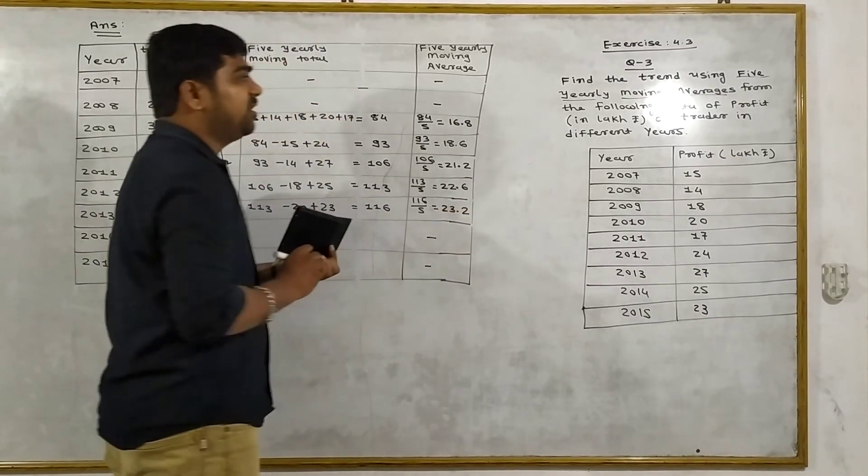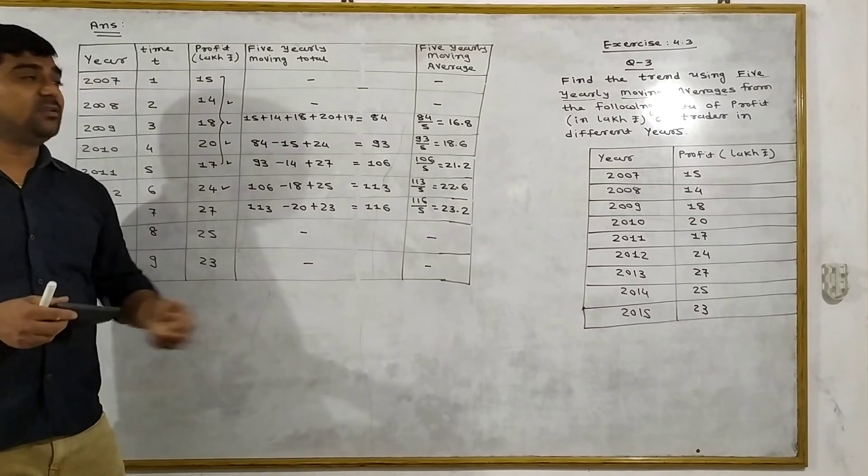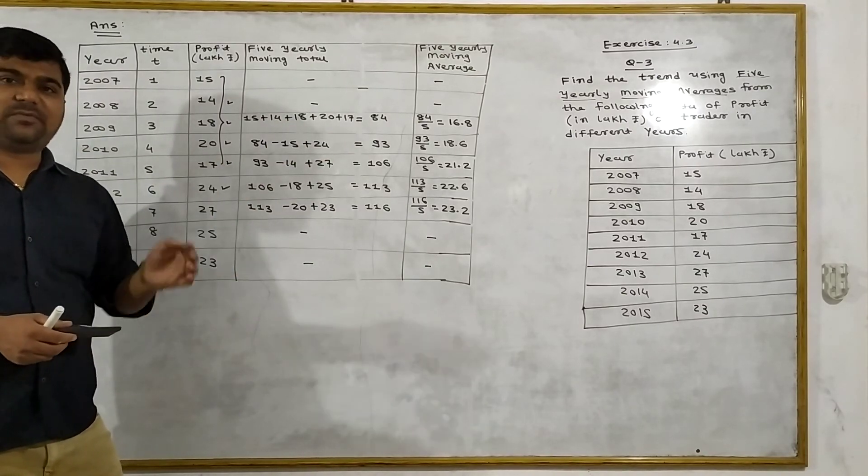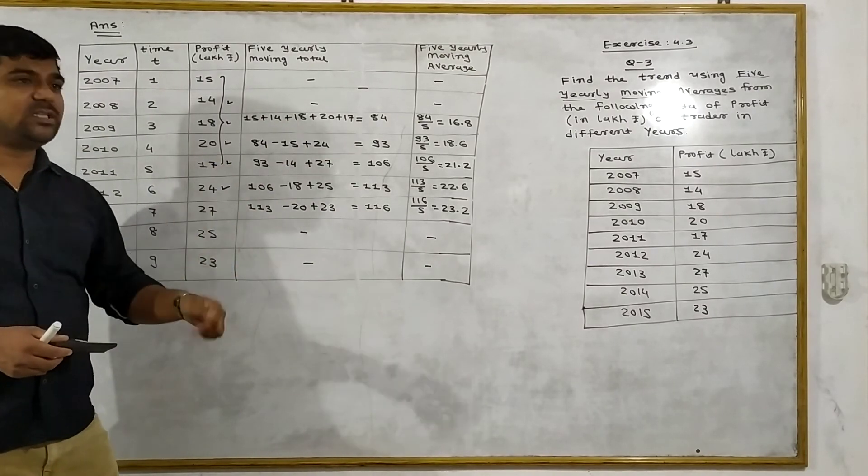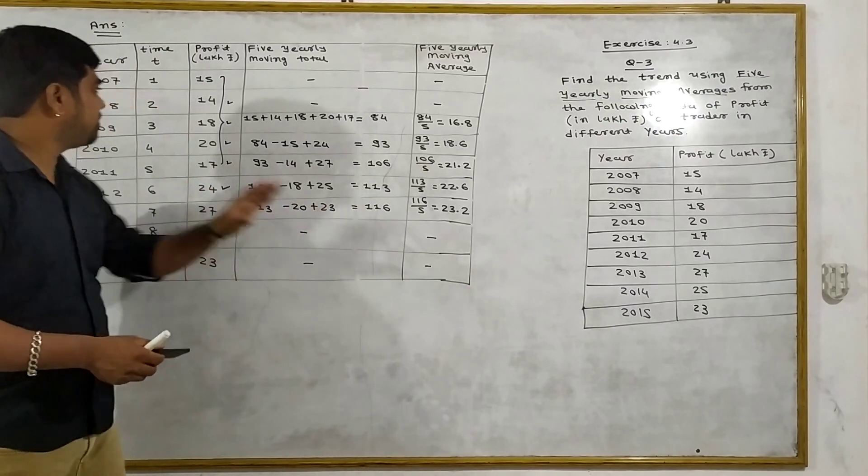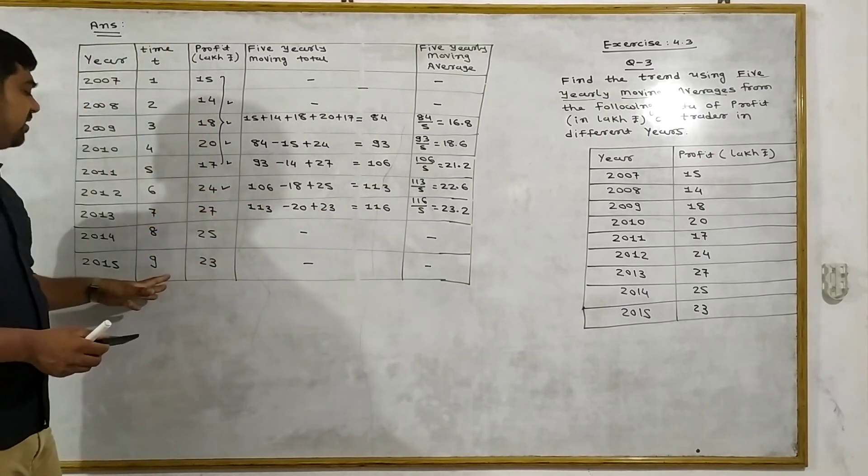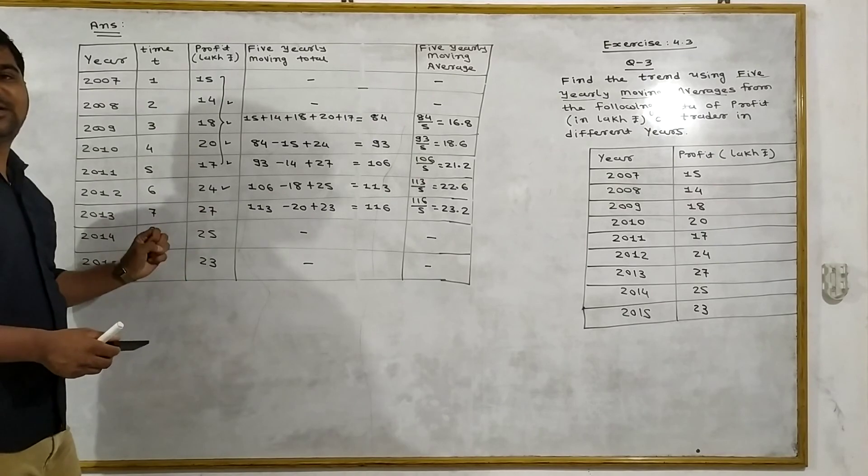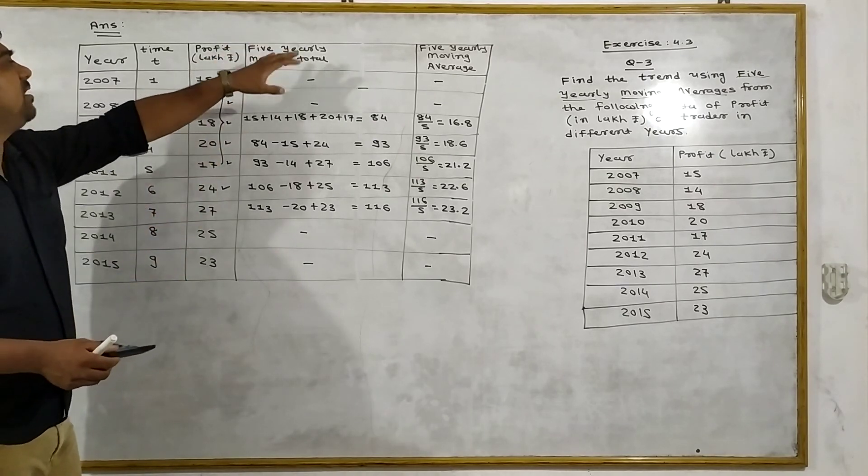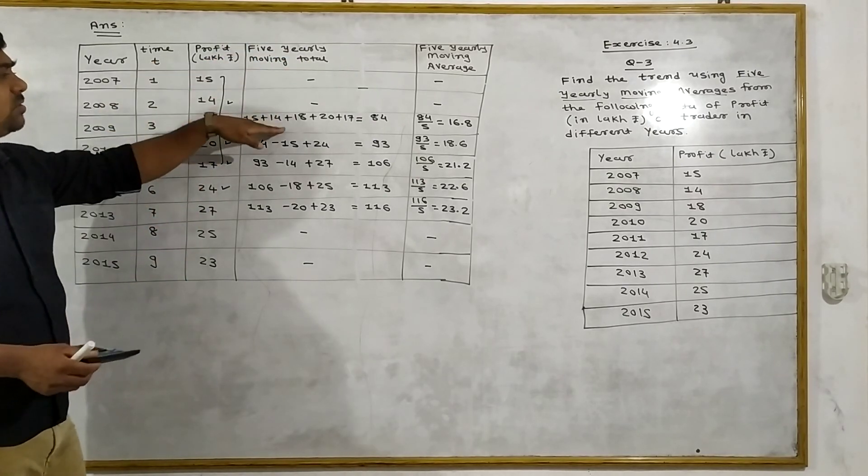Simple question here - 5 year moving average. This is how to calculate it. For 5 years, we calculate the total and moving average. What has to be written: time is written here, the year for each entry, 5 year moving total, and then the 5 year moving average.